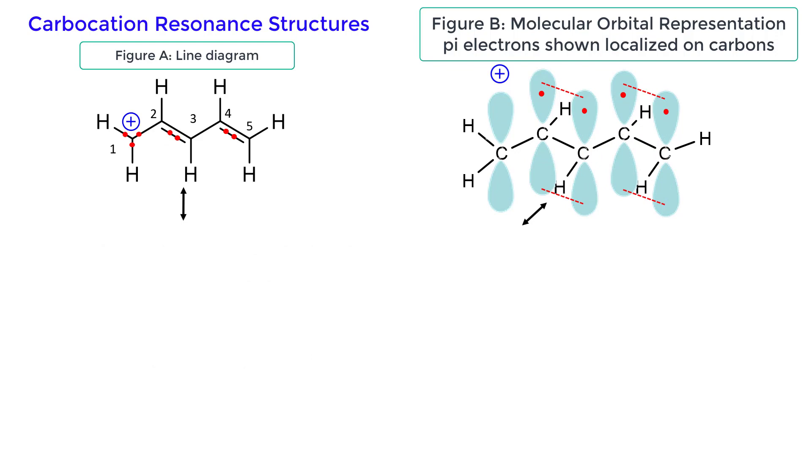Now draw the resonance structures. The two electrons in the pi bond move to form a new pi bond with the adjacent p orbital. We show the movement of the two electrons with one arrow. The tail of the arrow starts at the pi bond and the head ends between the two carbon atoms. The arrow shows you the movement of the pi electrons.